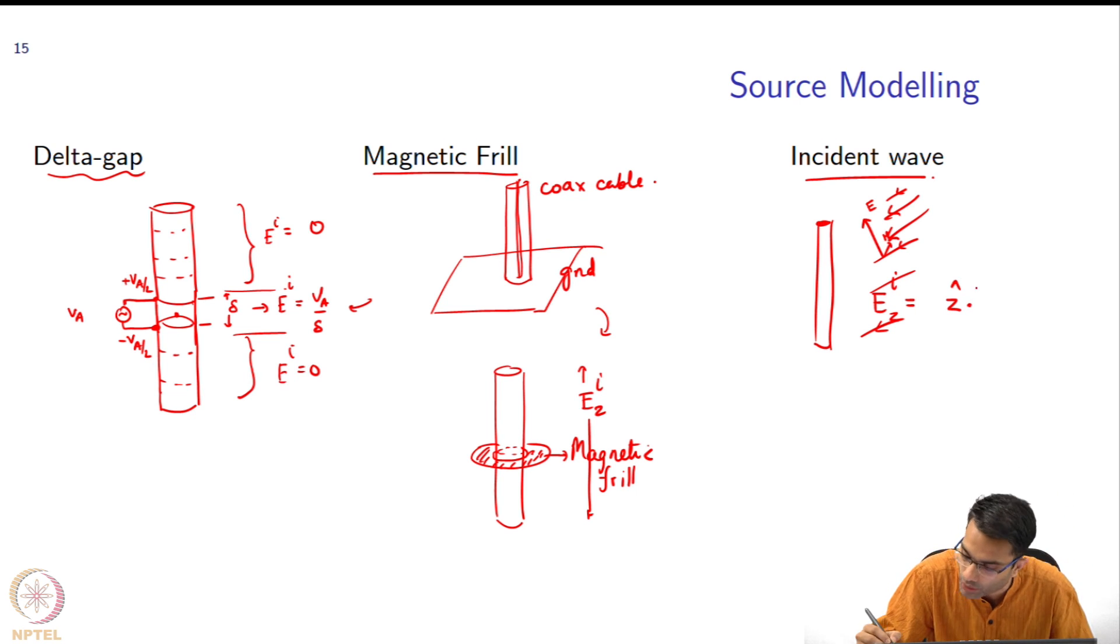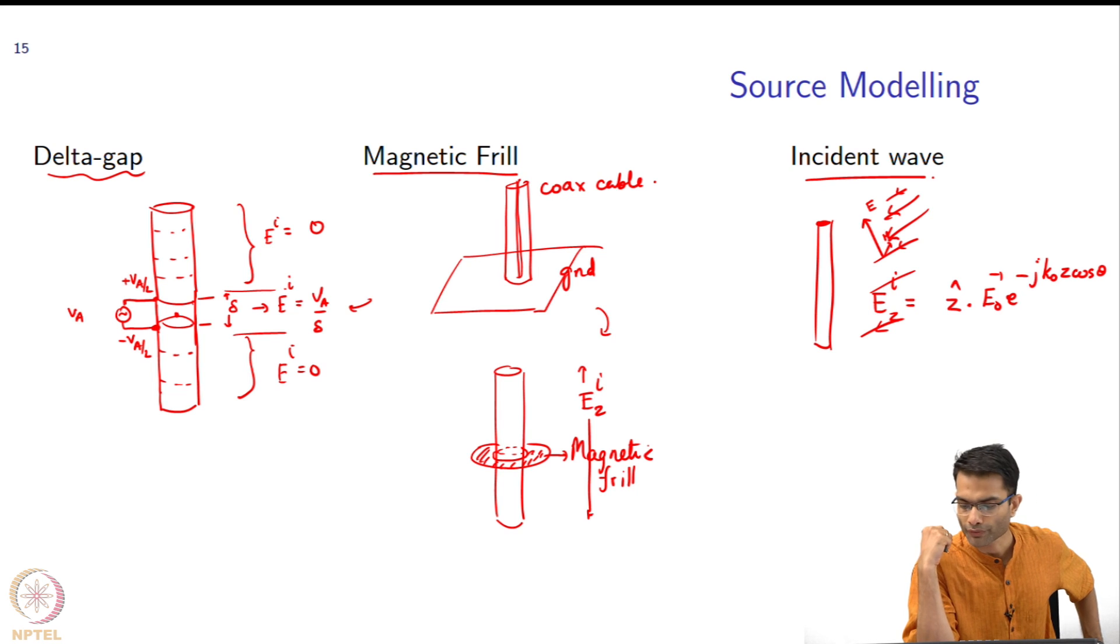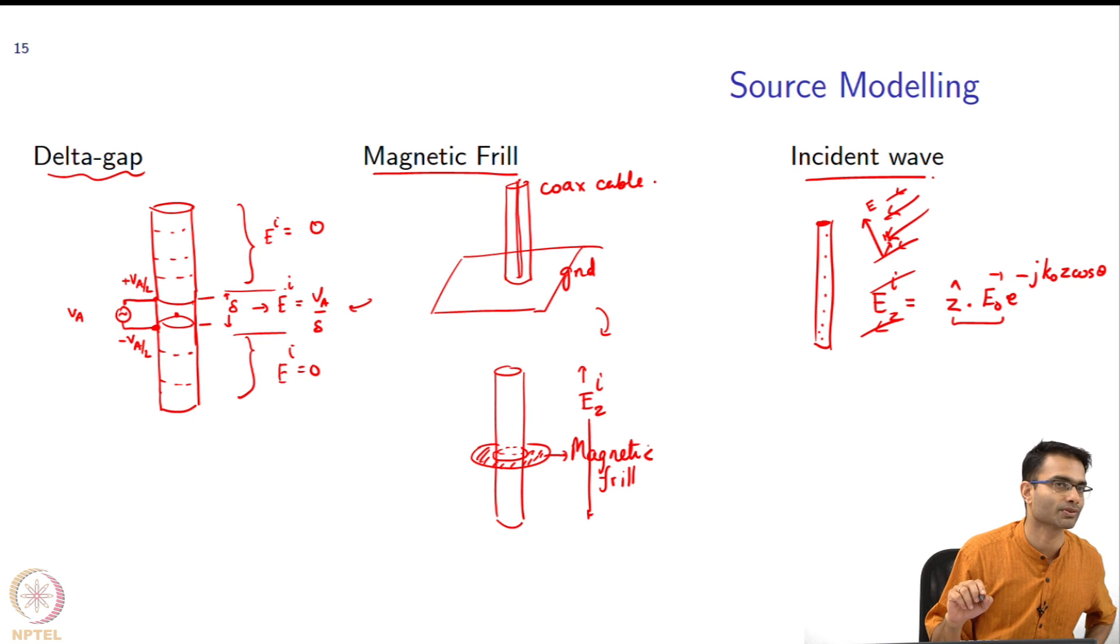This became z dot E_naught e to the minus j k_naught z cos theta. That's your plane wave without the omega t. If you have different polarization, this dot product will be different - it is what is the value of z dot E_naught. Whatever it is is going to appear, and this is going to be non-zero at every point inside this. Every z_m is going to be the case.